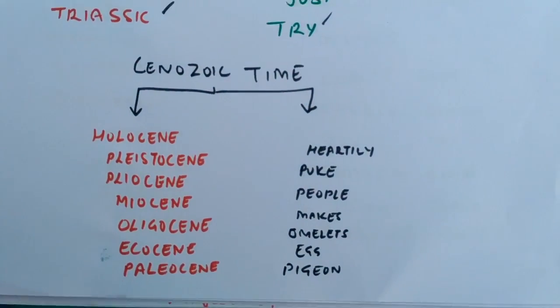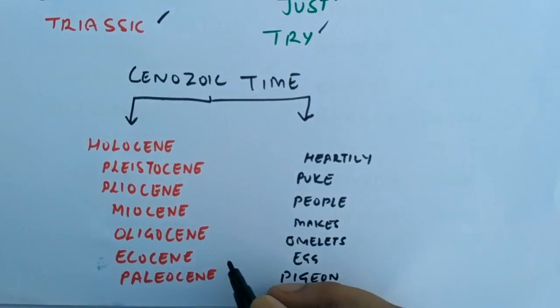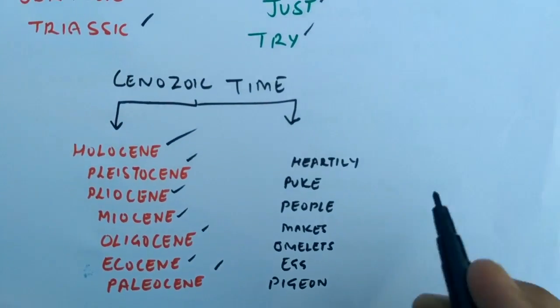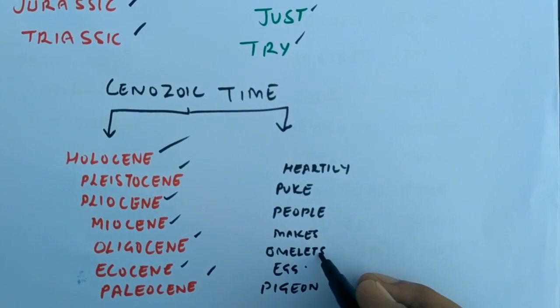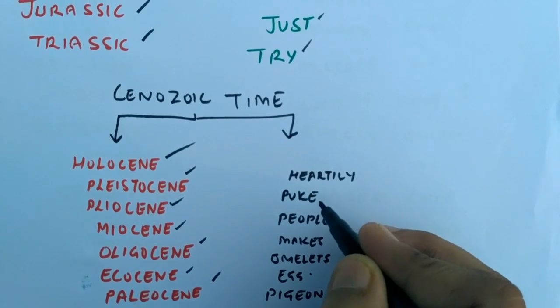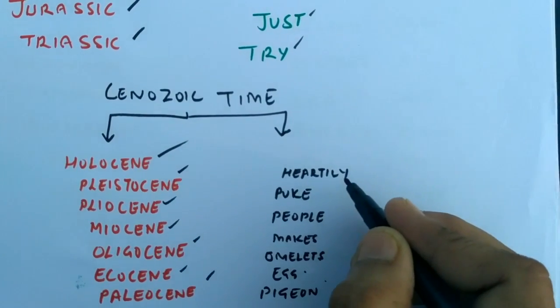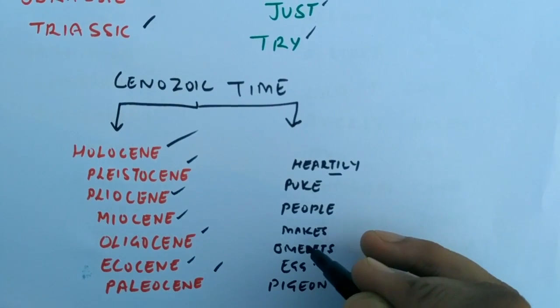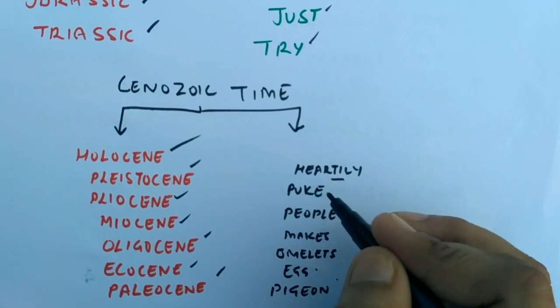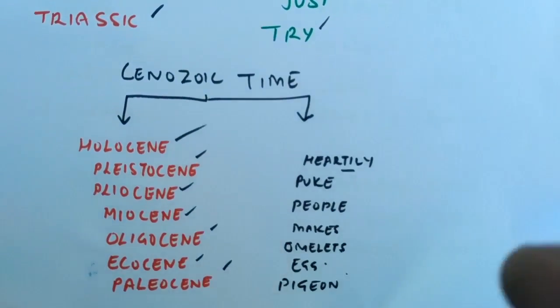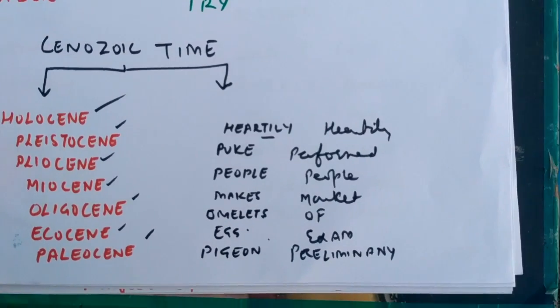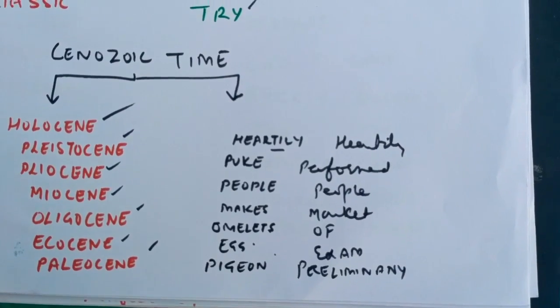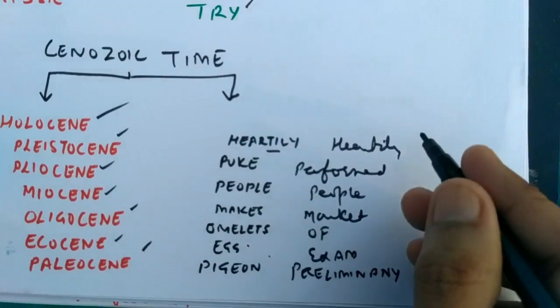Cenozoic time: Paleocene, Eocene, Oligocene, Miocene, Pliocene, Pleistocene, Holocene. Pizza, egg, omelette makes pupils puke healthily. Pizza, egg, omelettes makes pupils puke hotly, easily, helpful. There is another trick: Preliminary in preliminary exam of market, people performed hotly. It can also be helpful.